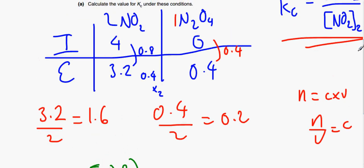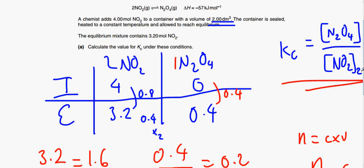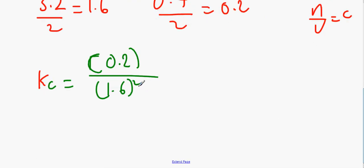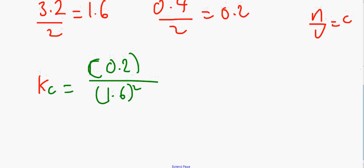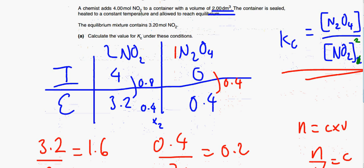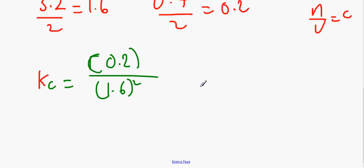Because over here we have two of these, so therefore we've got to square this. Obviously it should be at the top. So if we just calculate this on the calculator, we would end up with 0.0781.